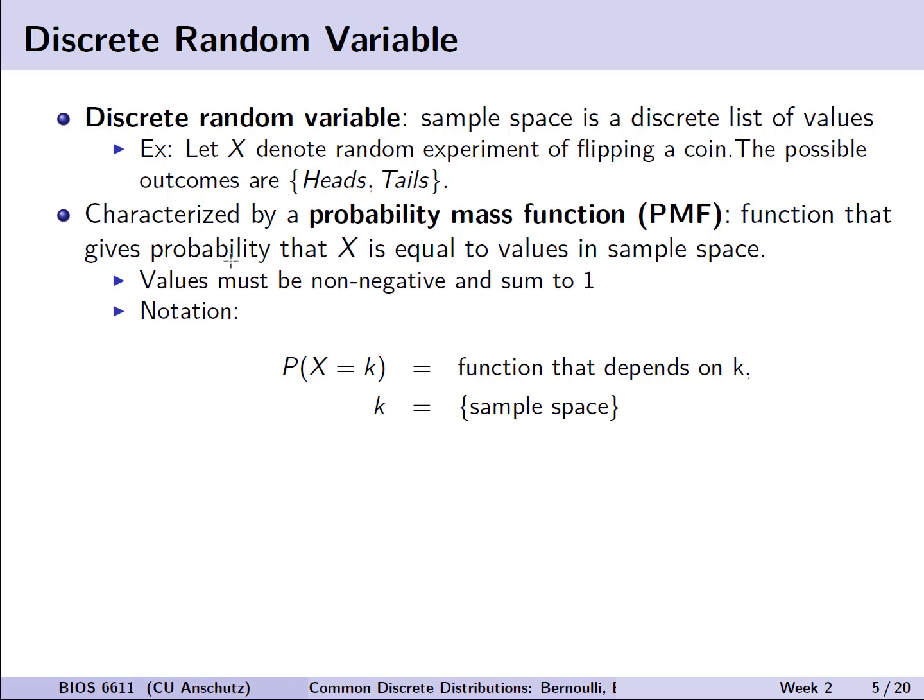We characterize this discrete random variable by a probability mass function or PMF. This is the function that gives the probability that our random variable X is equal to the given value or values we're looking at in the sample space. A few things to note: the values must be non-negative and sum to one. For notation, K represents those values that are in our sample space like heads or tails.